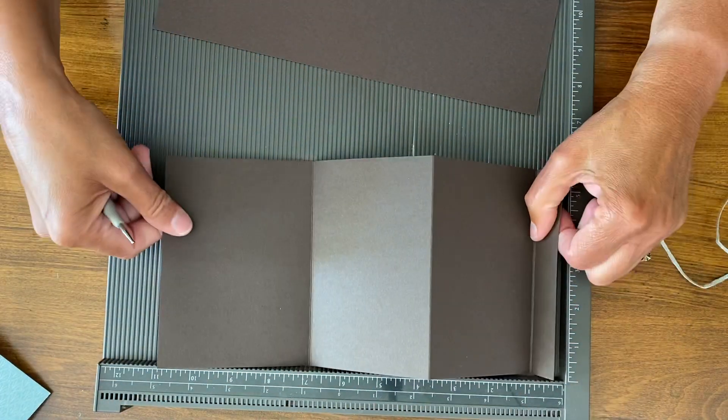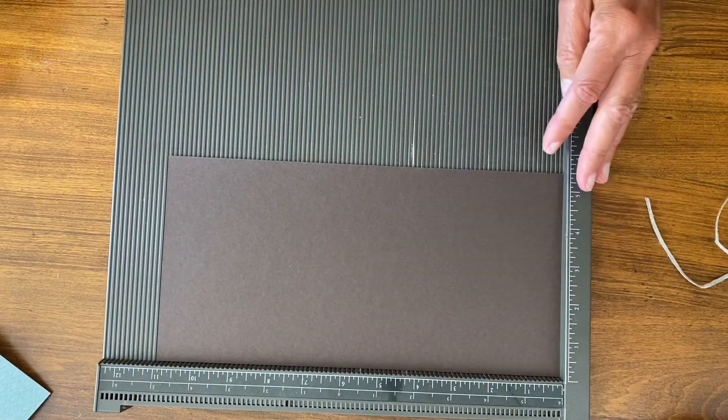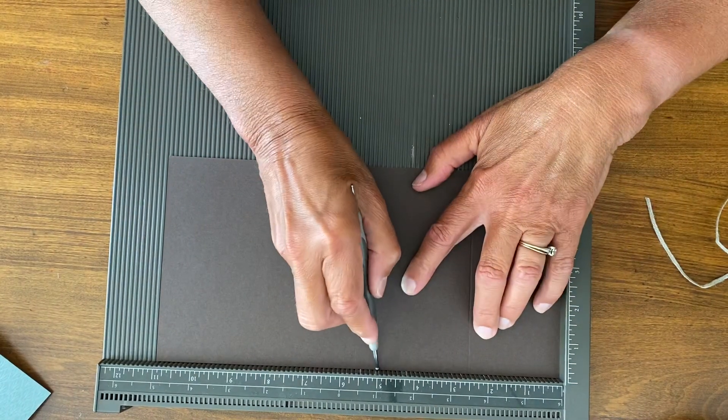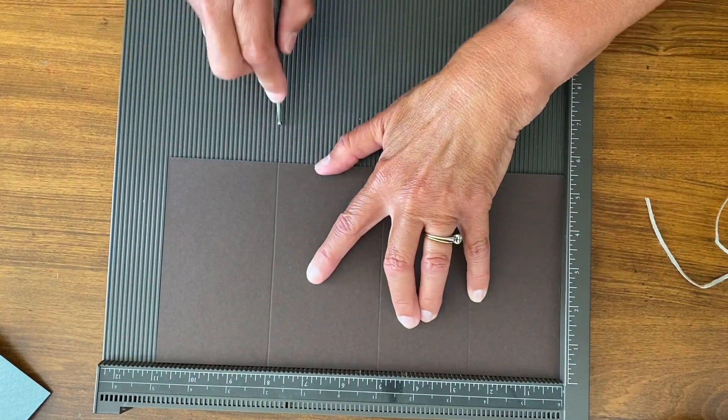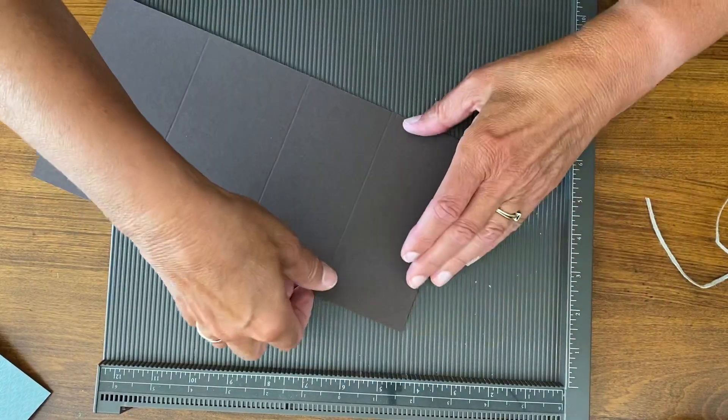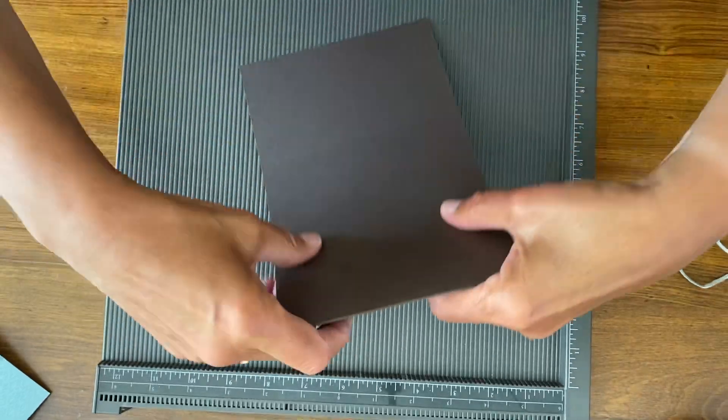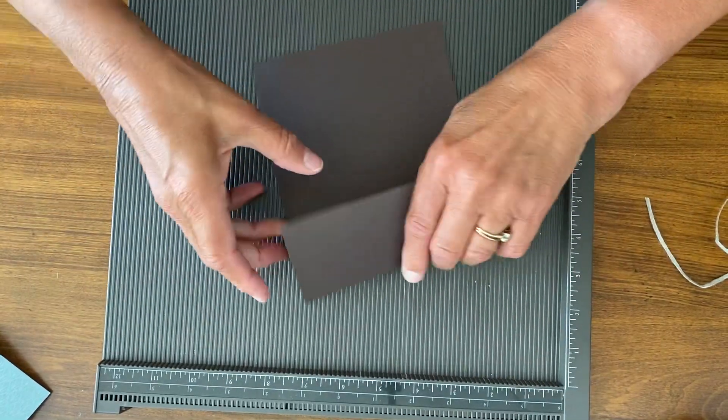Okay, so here is part of the card and then I have my five and a half by eleven. I'm going to score this at two and a half, at five, and at eight. I'm going to fold this up doing an accordion fold. So this would be an accordion fold card.